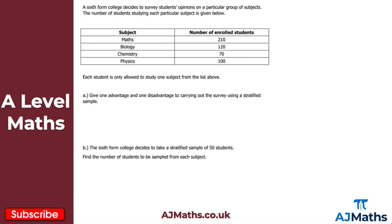For question three, a sixth form college decides to survey students' opinions on a particular group of subjects. We're given the number of students studying each subject, and we're told each student is only allowed to study one subject from the list — meaning there's no overlap between subjects.